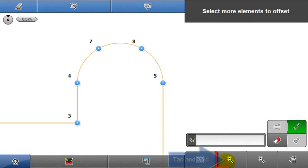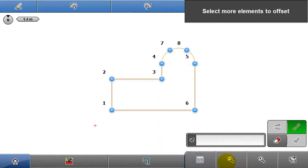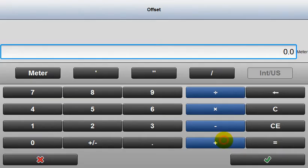Tap and hold zoom out to perform a zoom extent function. Now that all the lines are selected, input a uniform offset value. In this case, 0.5 metres.